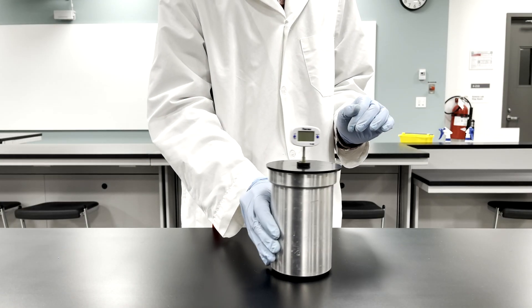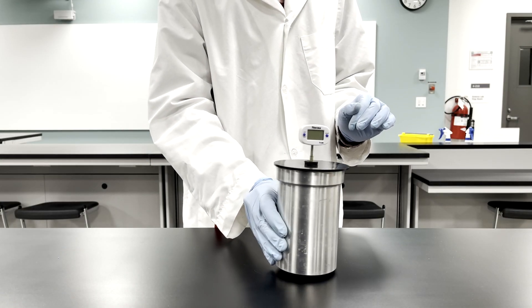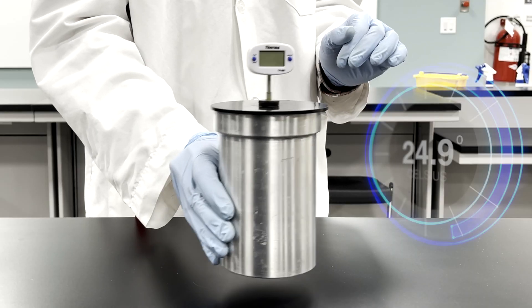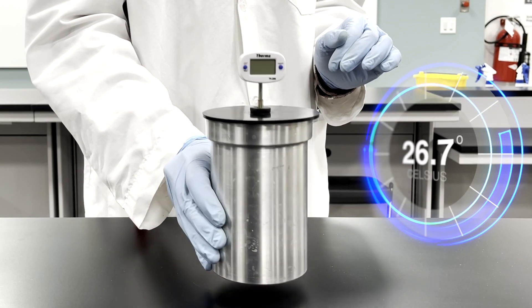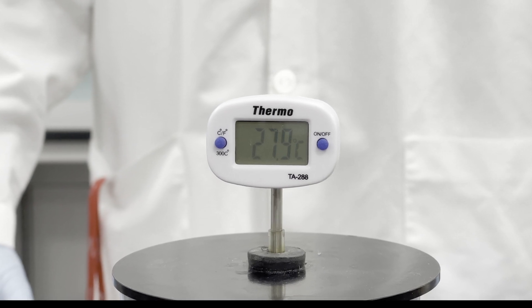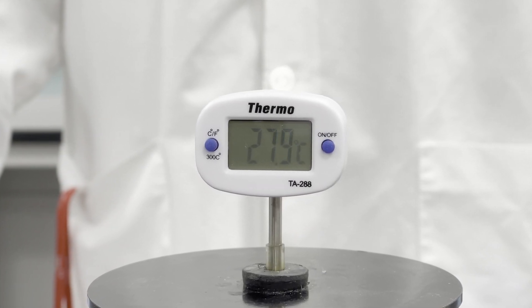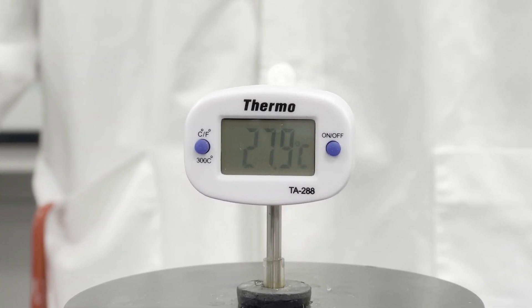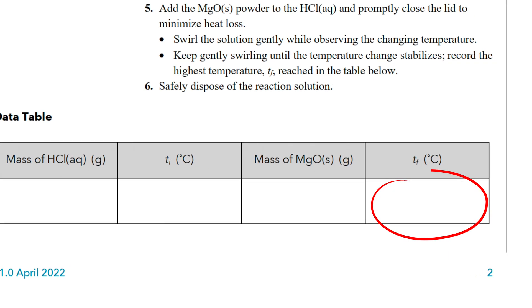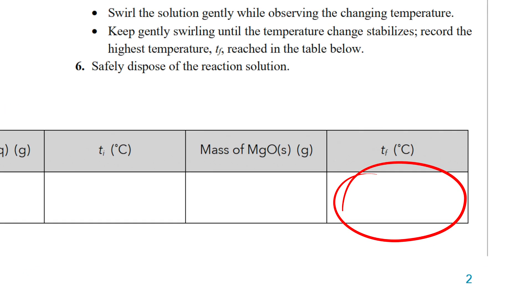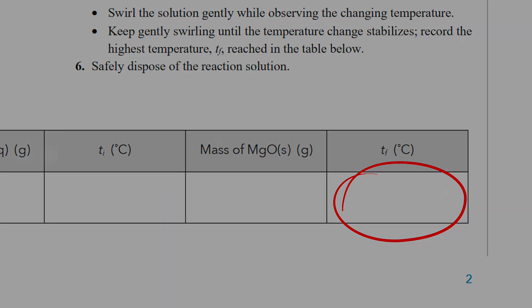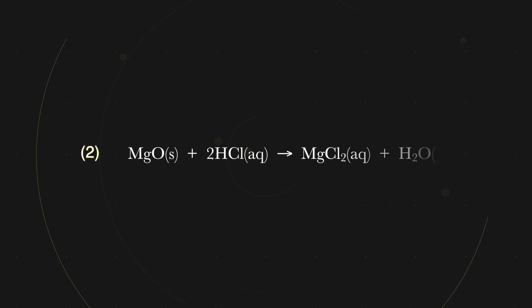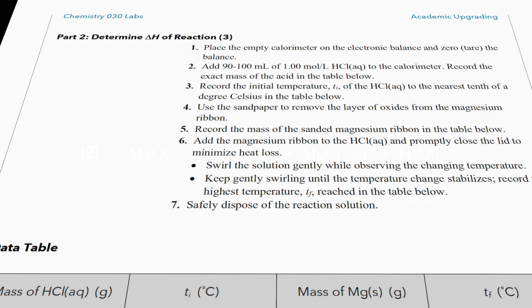The solution is gently swirled to encourage the reaction. The temperature will be seen to change as the reaction progresses. We wait until the temperature stabilizes, and the highest temperature reached is recorded as the final temperature in the data table. You now have all the information you need to calculate the enthalpy change for this reaction.